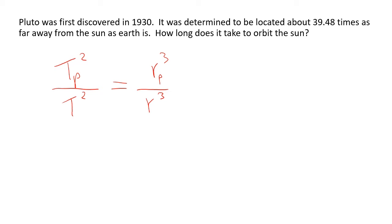If we use standard units of metres and seconds, we'll be working with very big numbers. Instead, let's pick Earth as our reference. These are ratios, so the units just need to be consistent — the same unit for both times and the same unit for both distances. If we pick Earth years as our time unit, Earth's orbital period is just one year. And if we pick astronomical units as our distance unit, Earth's average distance from the Sun is just one AU, making the math much easier.